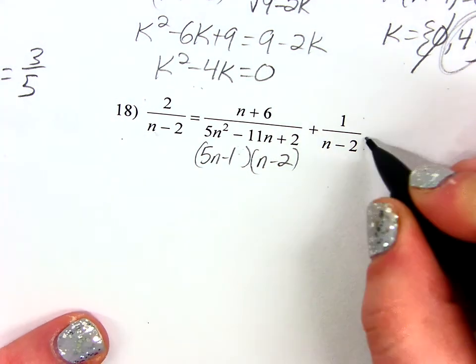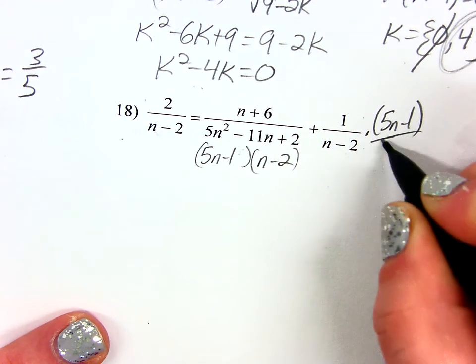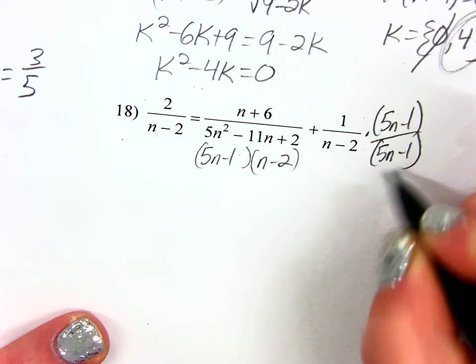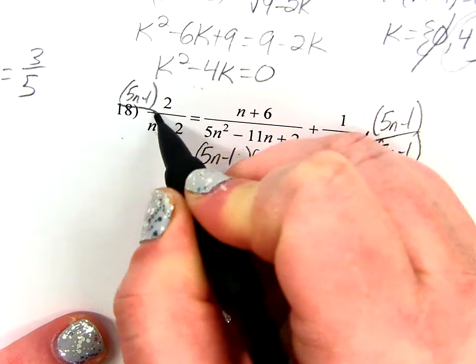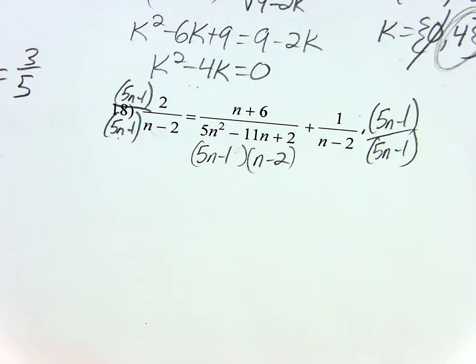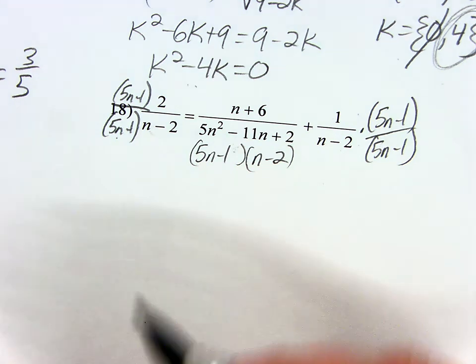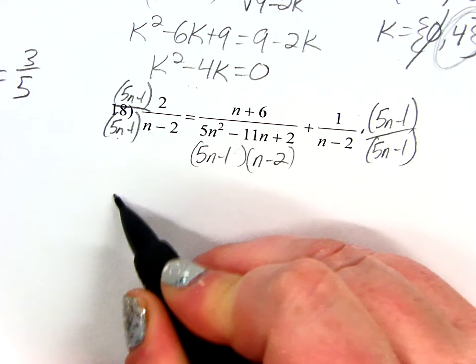So let's see. I'm going to multiply this by 5n minus 1. And same thing over here. And now, temporarily, I get to ignore those denominators altogether and just solve the equation in the numerator.